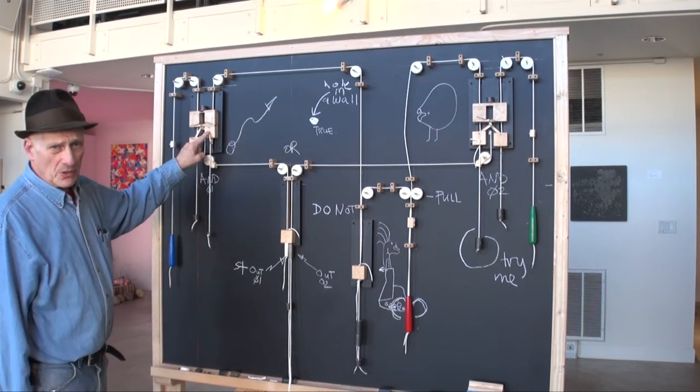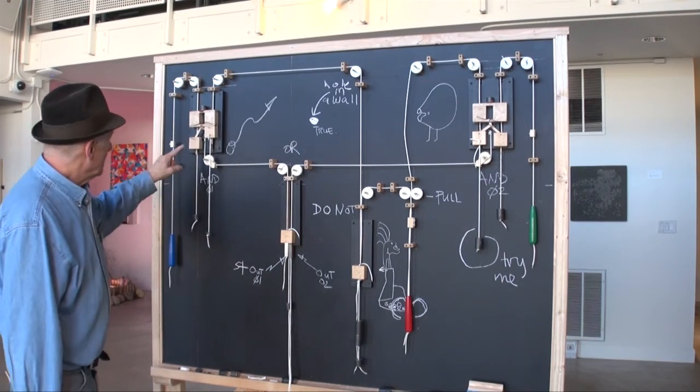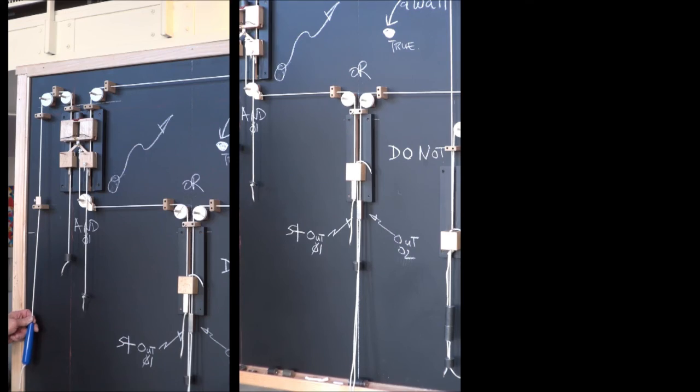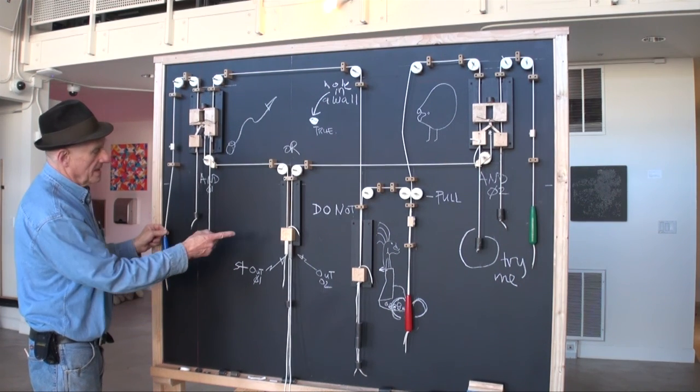Now this AND gate has one input already working. So, if I pull this handle, if you look at the OR, you'll see it gets an output.